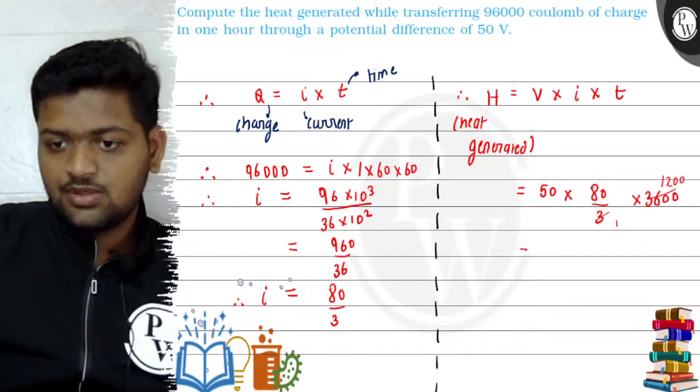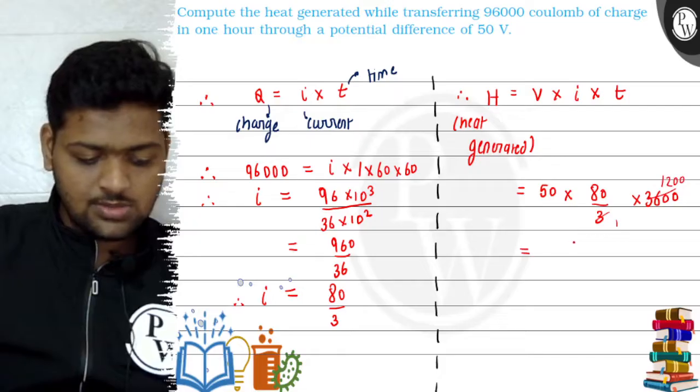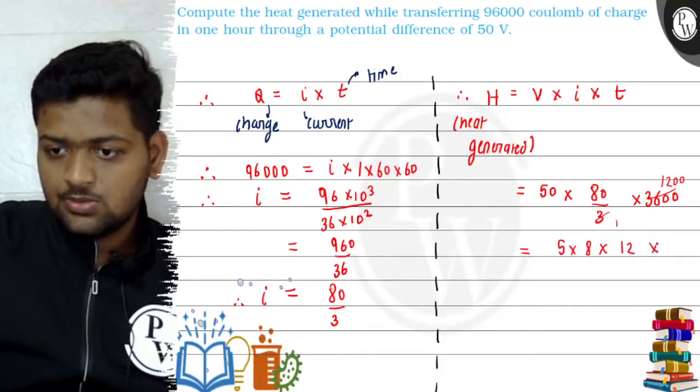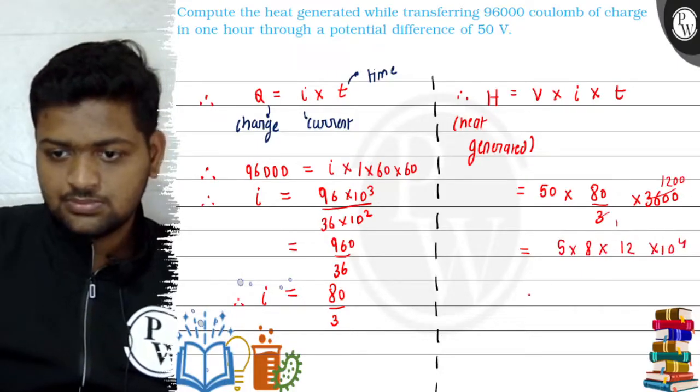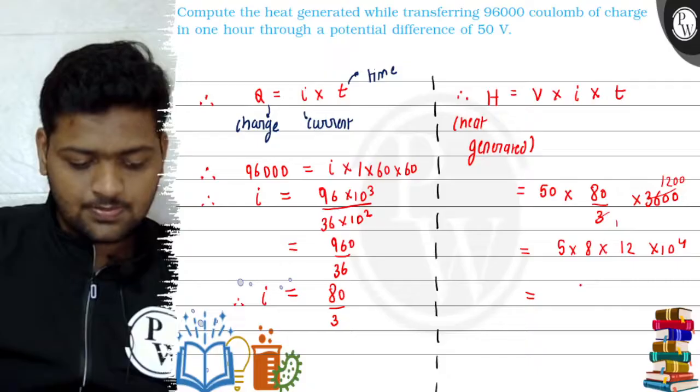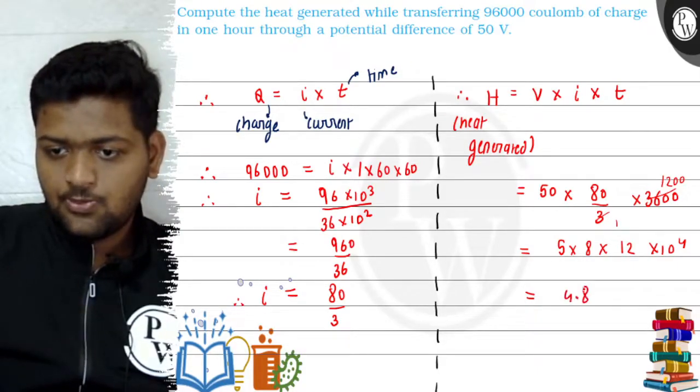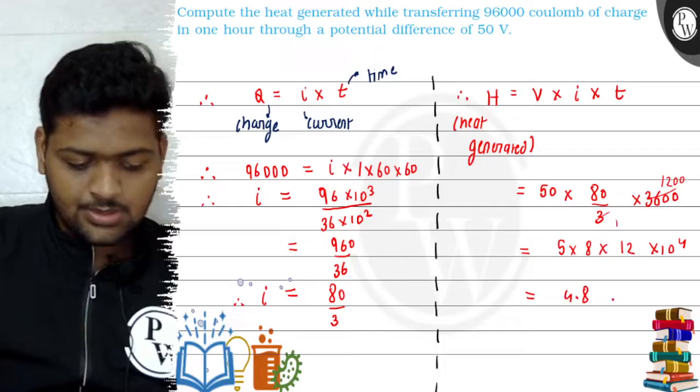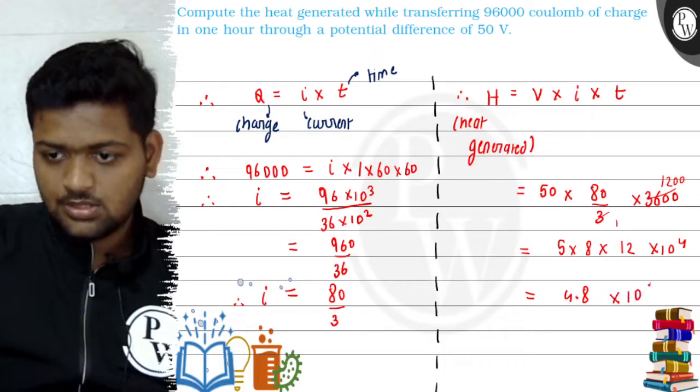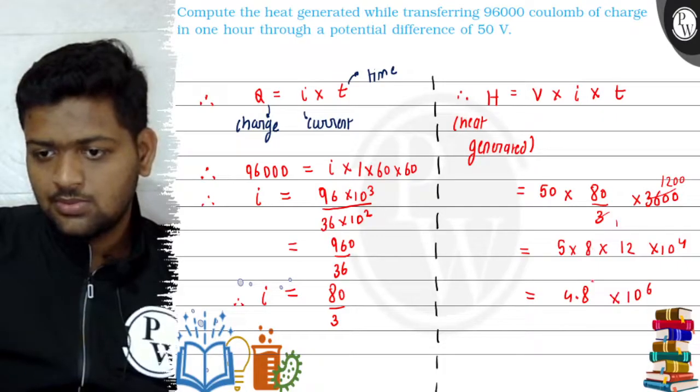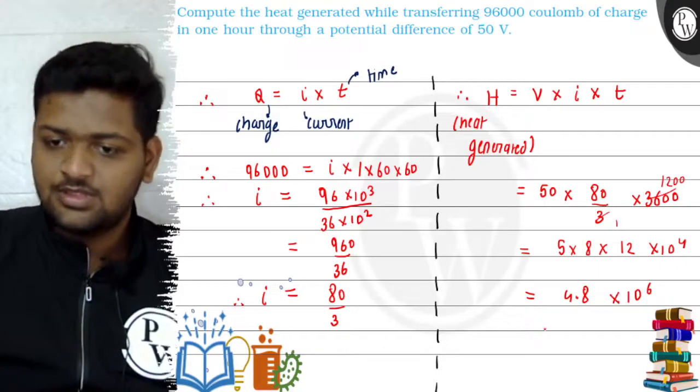Okay, now we further solve this. It will become 5 into 8 into 12 into 10 to the power 4. Okay. So it will be 4.8 into 10 to the power 6.